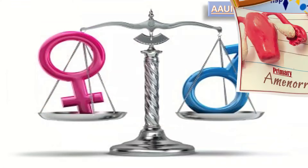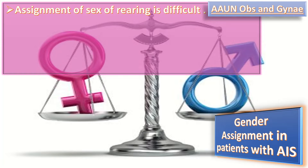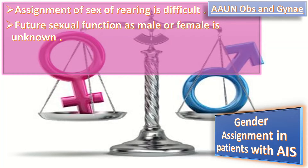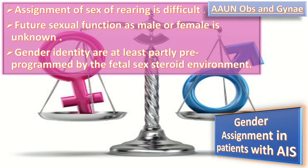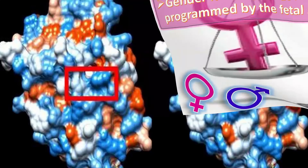Gender assignment in patients with AIS can be difficult. For cases identified in early infancy, assignment of the sex of rearing is complex with no data concerning outcome. Future sexual function as male or female is unknown, with physical growth of genitalia being unpredictable and a lack of scientific knowledge about how sexual orientation and gender identity develop. It is likely that both male and female type behavior and gender identity are at least partly pre-programmed by the fetal sex steroid environment, and in partial AIS this environment is unknown.